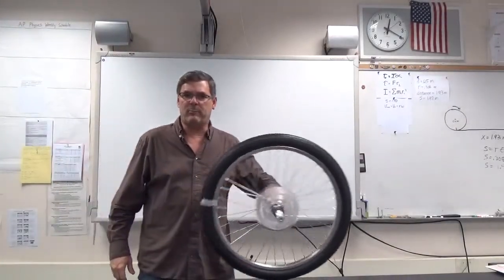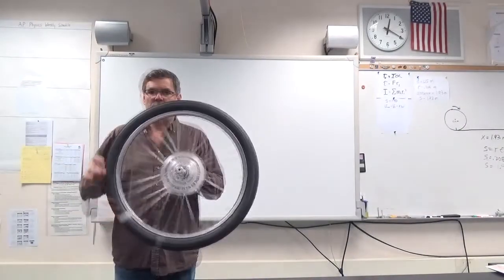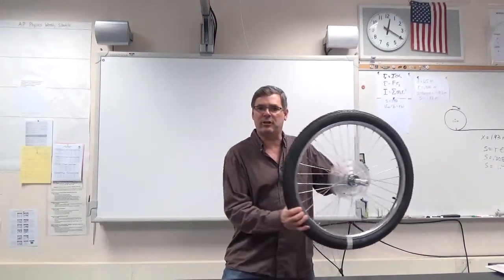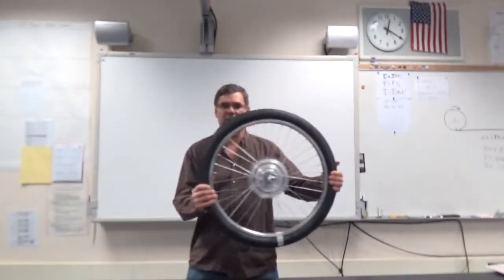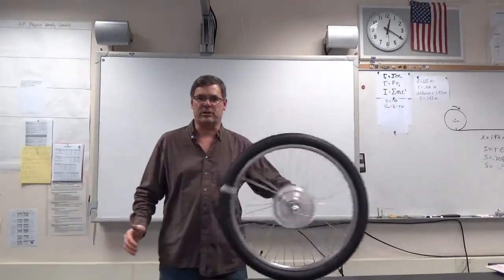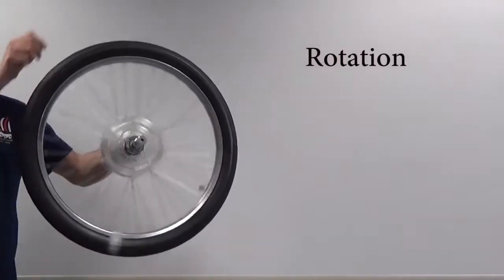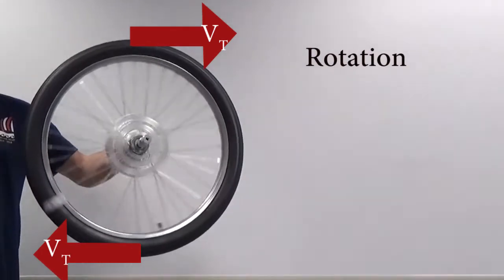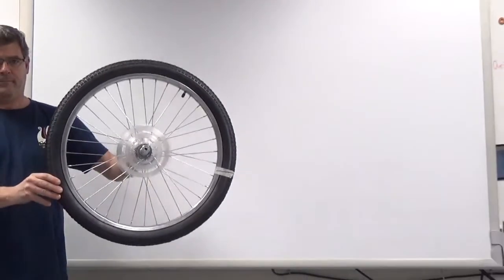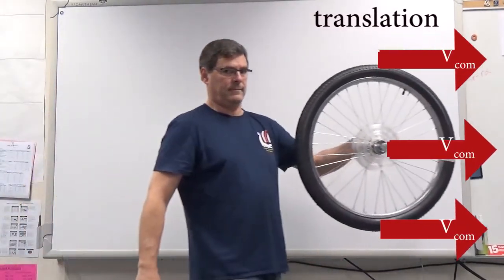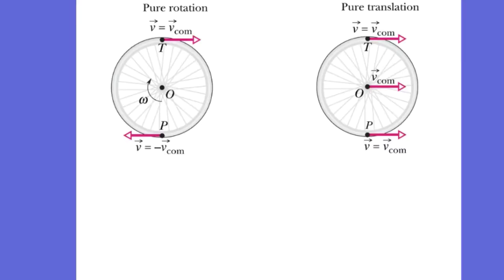We can think of rolling motion as rotational motion happening at the same time as translational motion. If we combine this rotational motion with this translational motion, we get rolling motion. In the pure rotation diagram, vectors represent the tangential velocity at the edge of the wheel, which equals the velocity of the center of mass. In the translational diagram, vectors represent just the translational motion of the wheel.